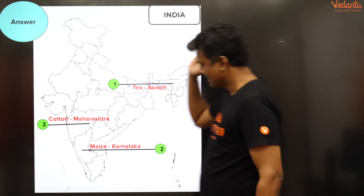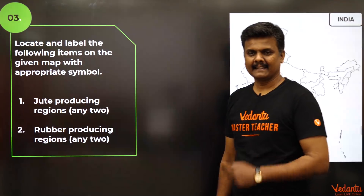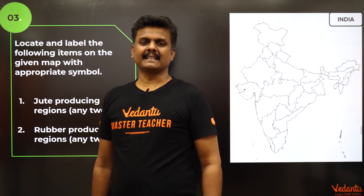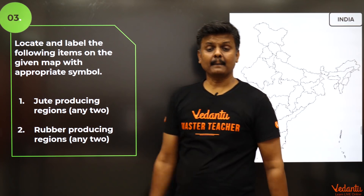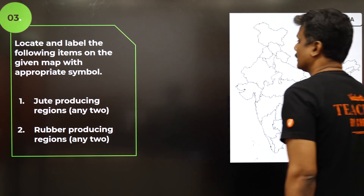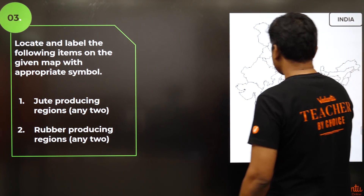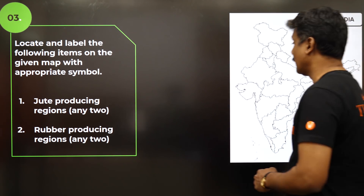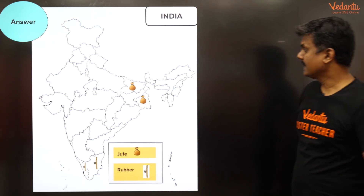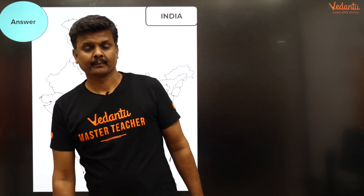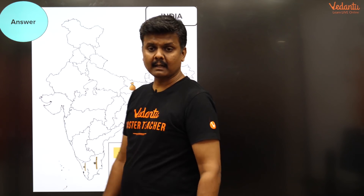So the answers: crop one is tea — introduced by the British — located in Assam. Crop two is maize — used both as food and fodder — located in Karnataka. Crop three is cotton — grows well in black soil — located in Maharashtra. For jute producing regions: West Bengal and Bihar. For rubber producing regions: Kerala and Tamil Nadu.